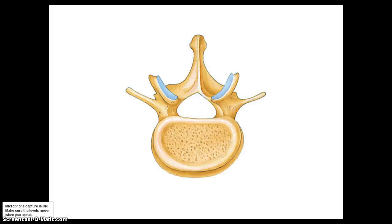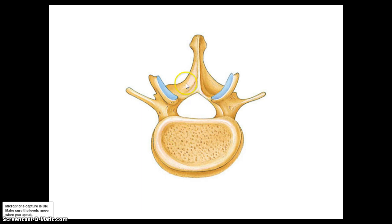Here is a view of a typical vertebra — a lumbar vertebra viewed from the superior aspect. The large section at the front, making up most of the mass, is called the body or centrum. This is where the intervertebral disc rests and bears most of the body's weight. Behind that is the vertebral arch, which surrounds a hollow space called the vertebral foramen — the passageway for the spinal cord and spinal nerves.